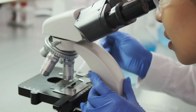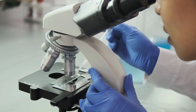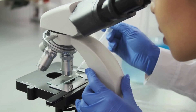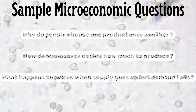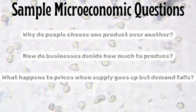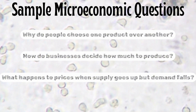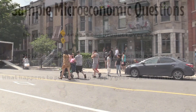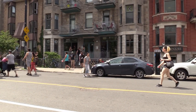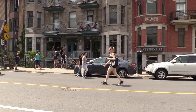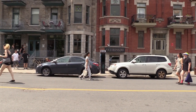The types of questions you might ask are: why do people choose one product over another? How do businesses decide how much to produce? Or what happens to prices when supply goes up but demand falls? Micro looks at households, businesses, and specific markets. It's personal — it's the economics of you and me.